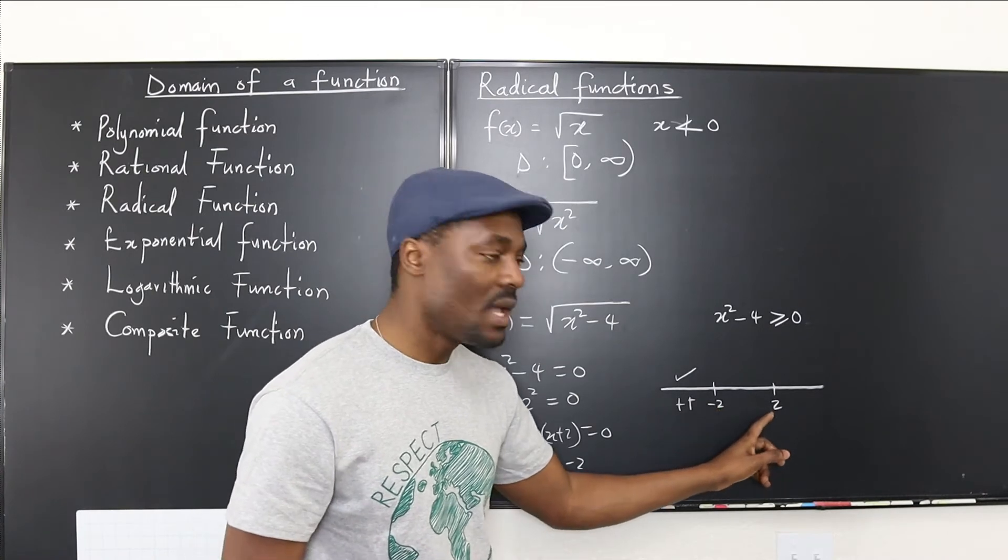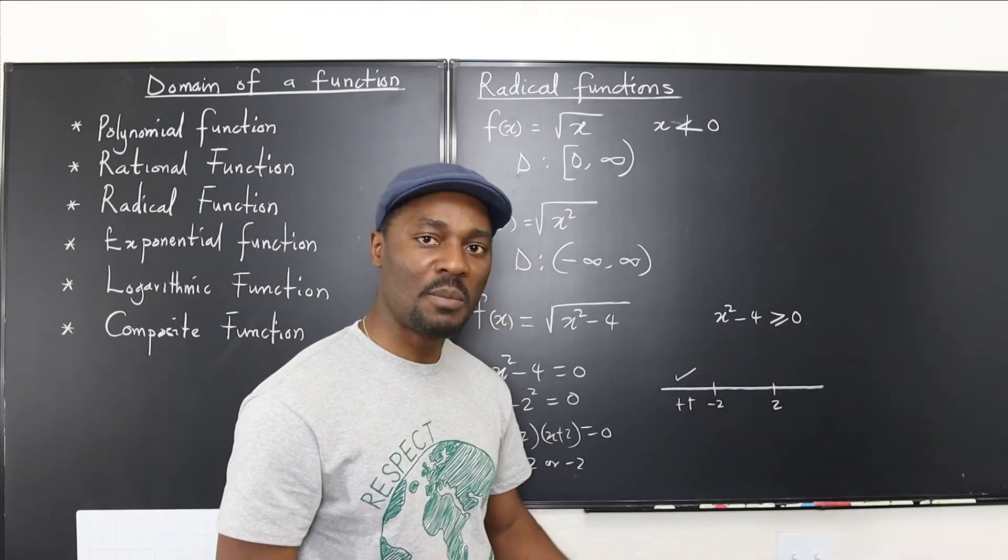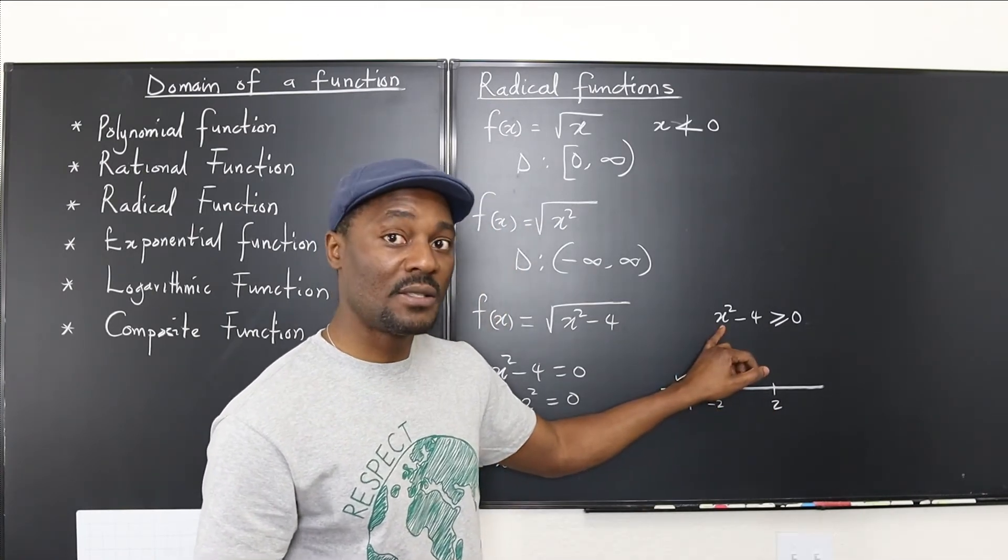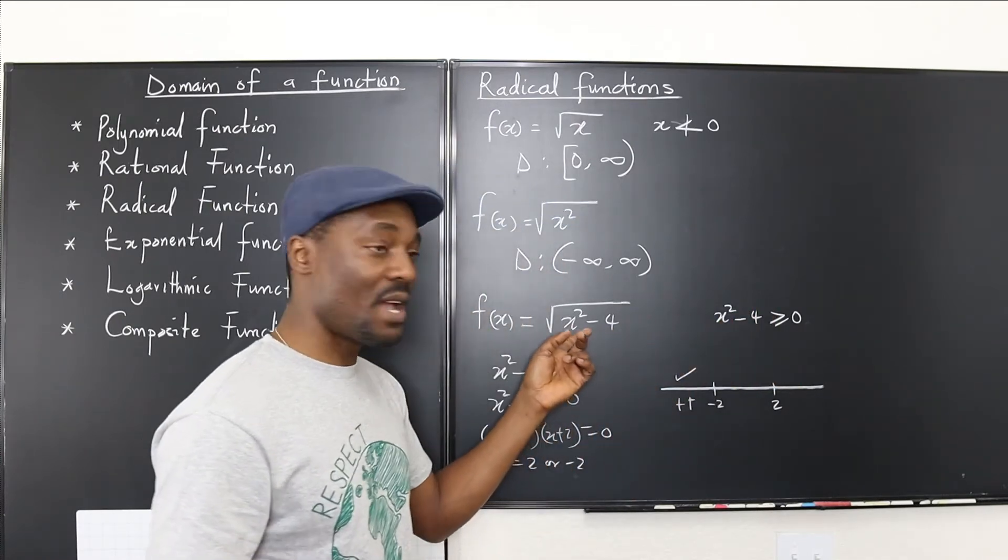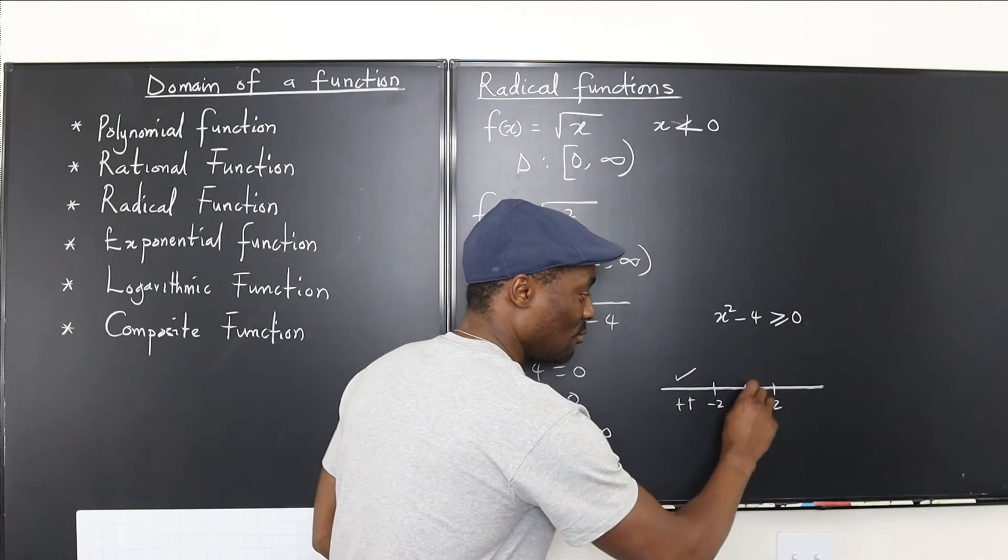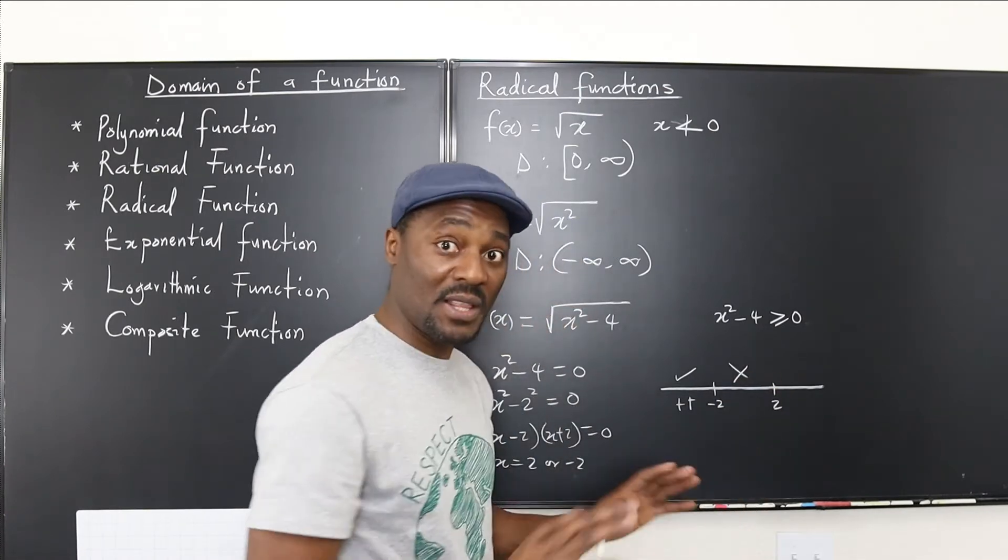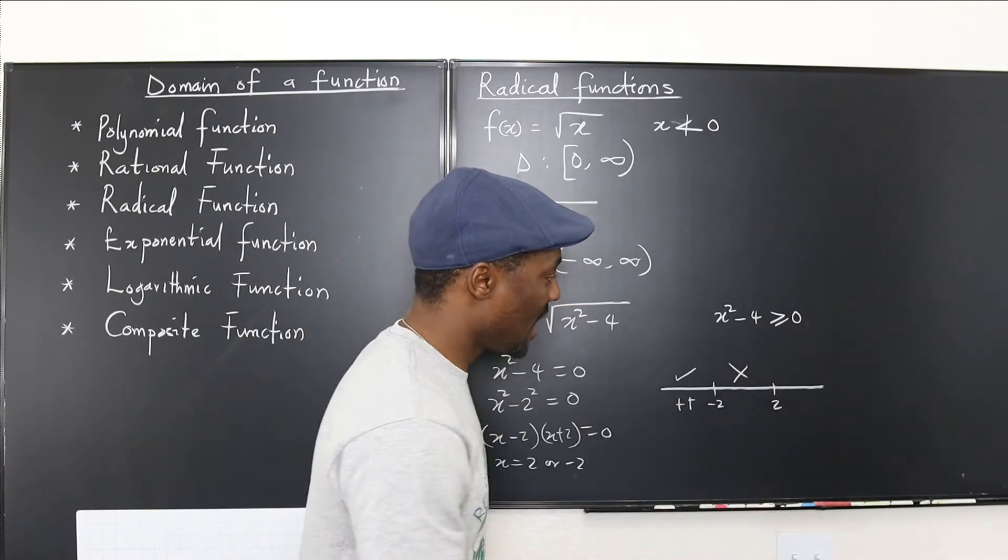Now let's go to a number between negative 2 and 2. I'm going to pick the number zero. Zero squared is zero minus 4. That gives me a negative value. So it means if I plug in zero here, I'm going to get a negative value. So anything in this region cannot be accepted, cannot be in the domain.